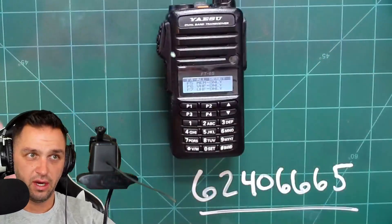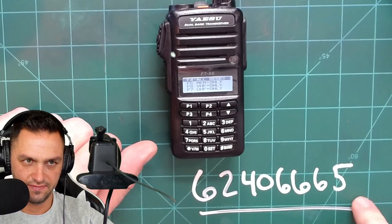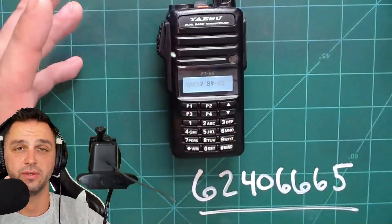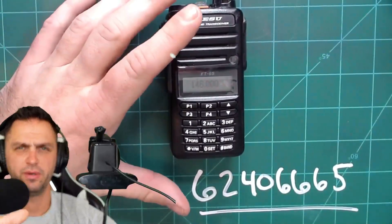you're in this advanced menu system, and all you're going to do in here is type in this number 62406665, and what's going to happen is the radio is going to reboot itself, and now it's frequency unlocked, meaning you could transmit out of band, but I want to make a note or two.